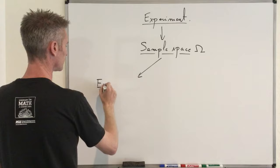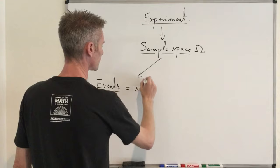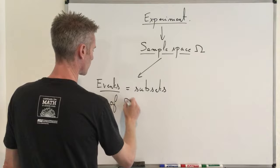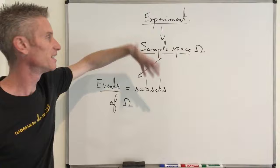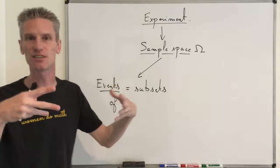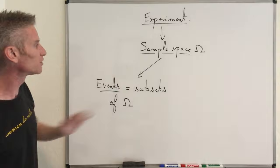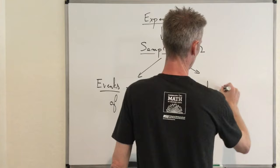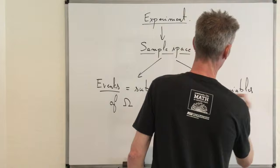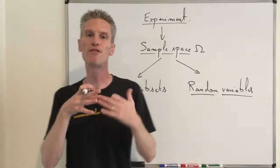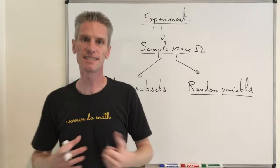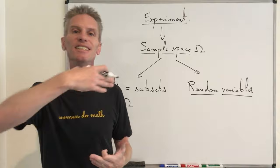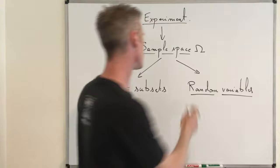From this, you can deduce the concept of events. Events are basically subsets of Omega. You can define a probability on Omega and look at the probability of events — something that measures the likelihood of those events. And instead of going that way, you can instead look at random variables. Random variables are not going to be subsets of Omega; they are going to be functions defined on Omega.